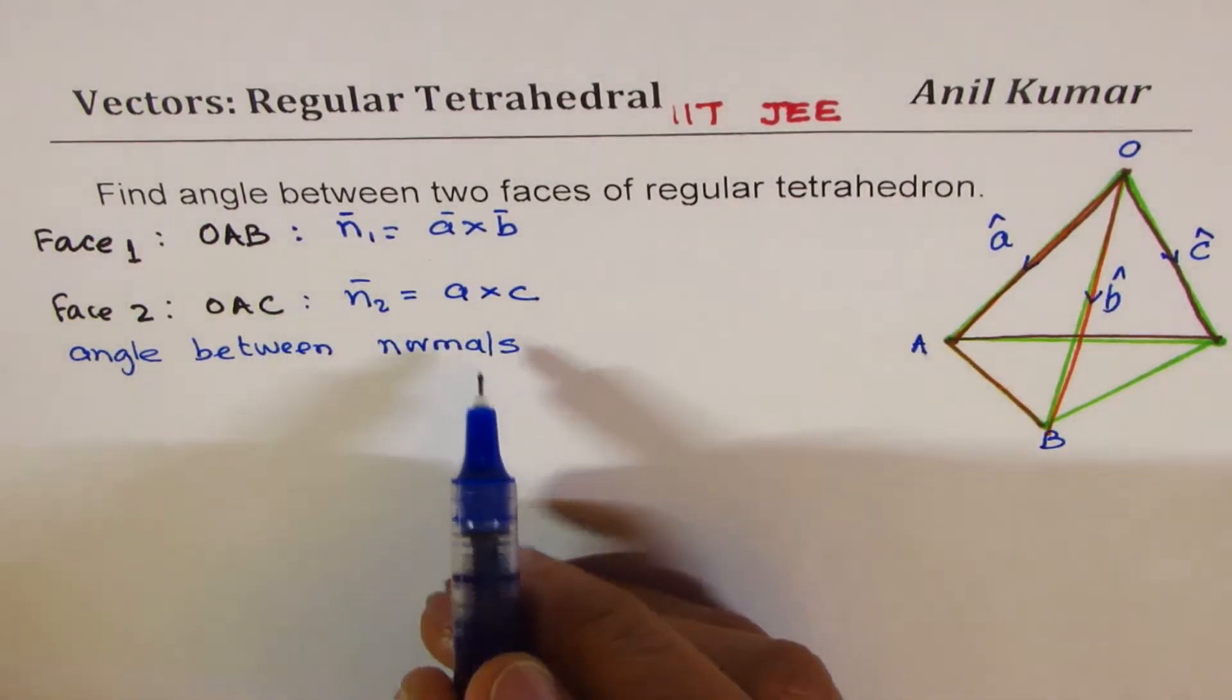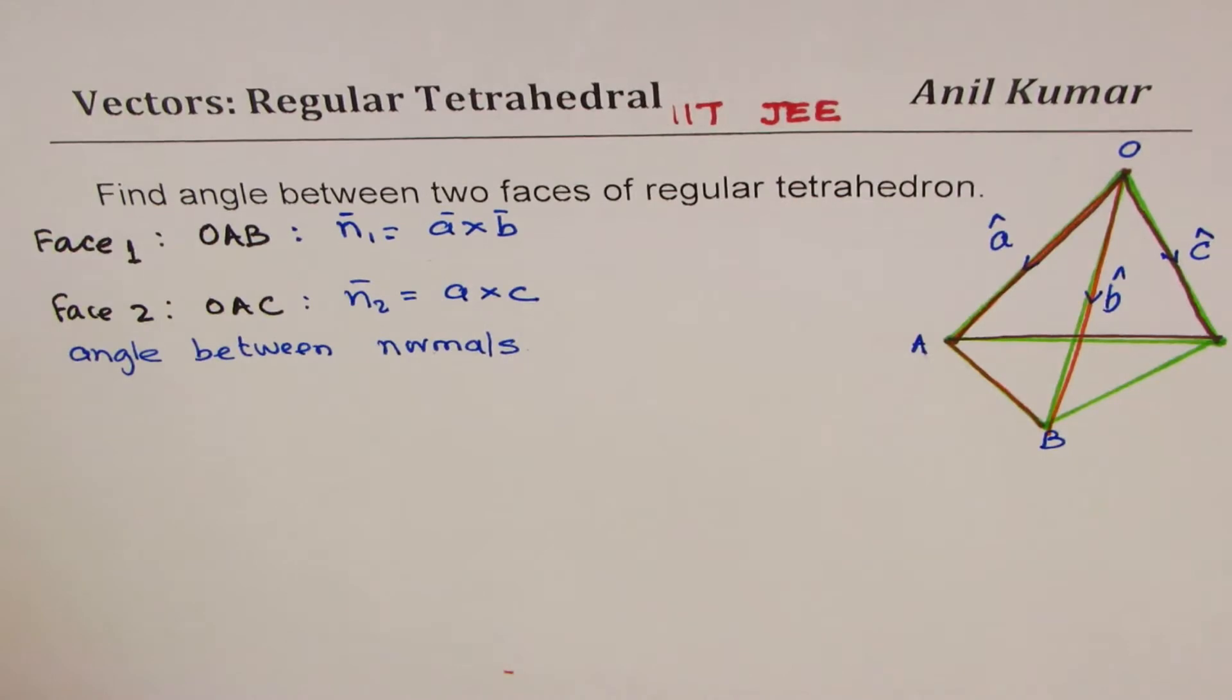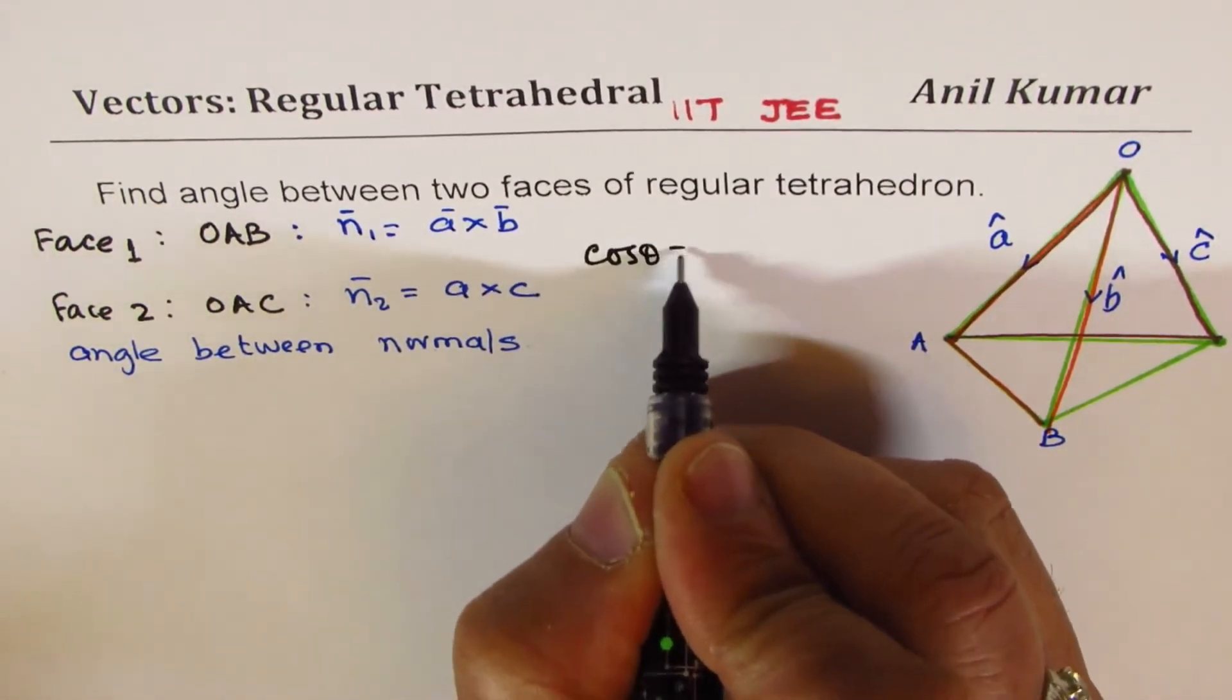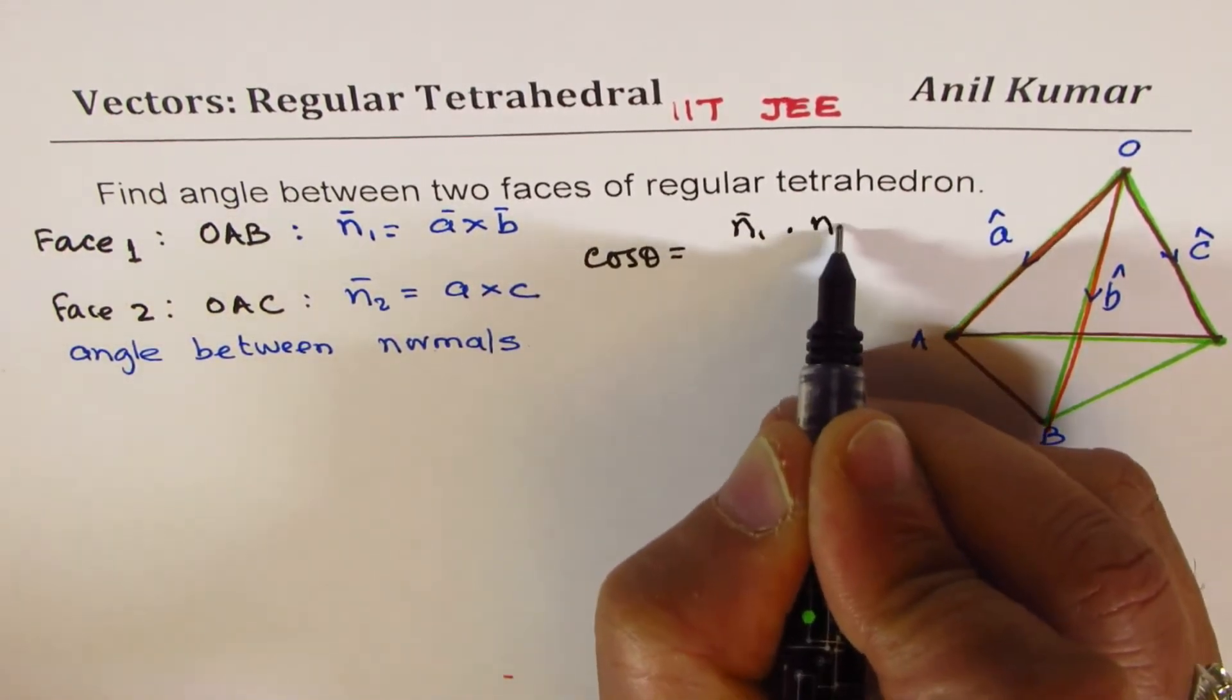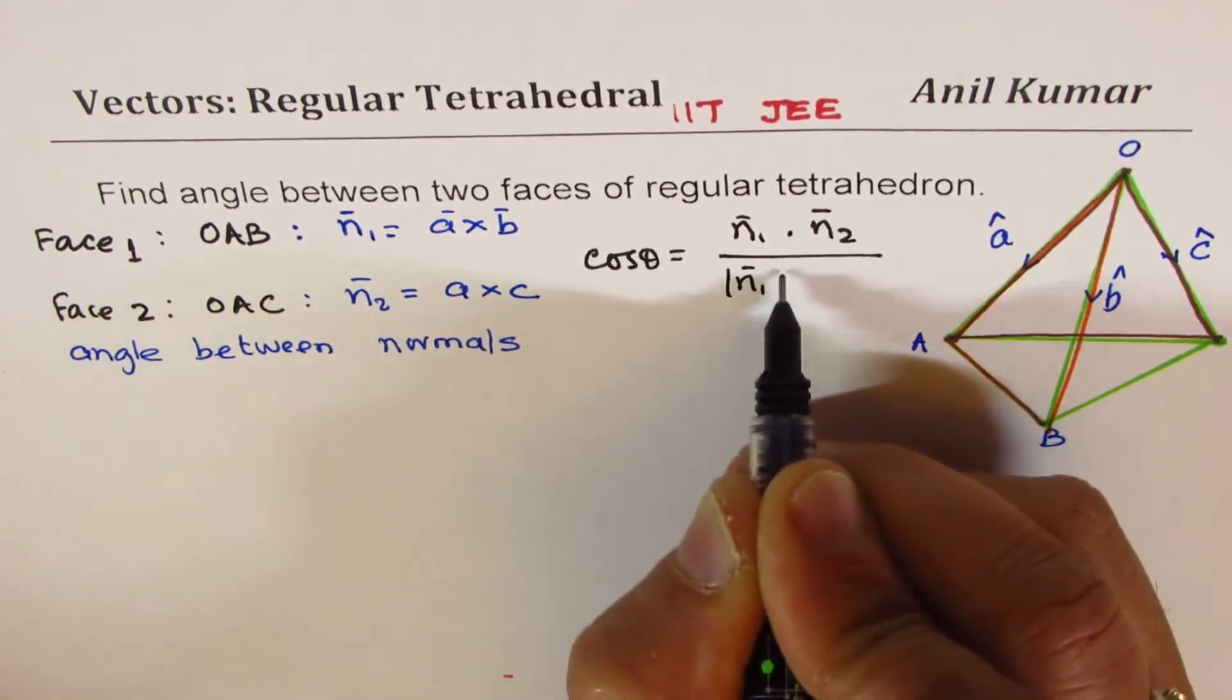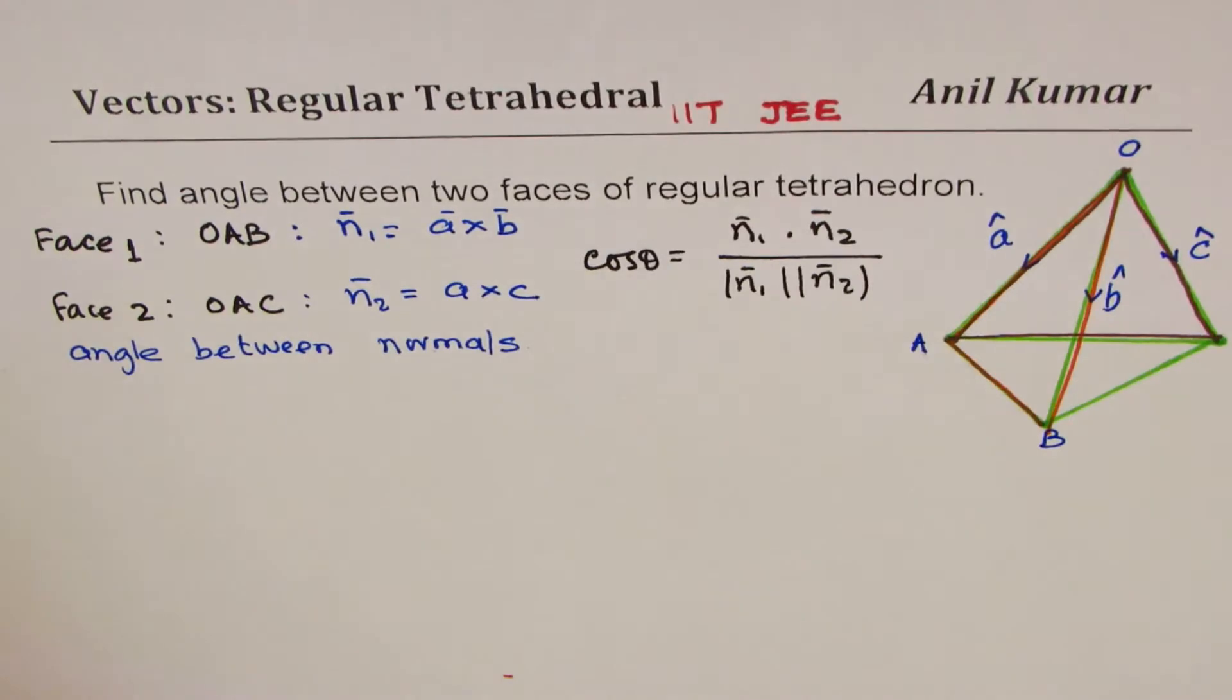Now finding angle between N₁ and N₂ means we could use the formula that cos θ equals N₁·N₂ divided by |N₁| times |N₂|.